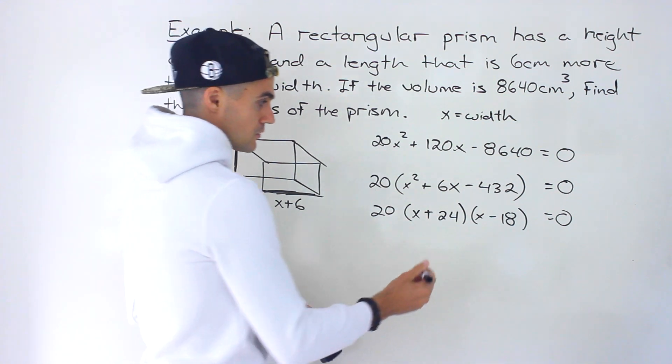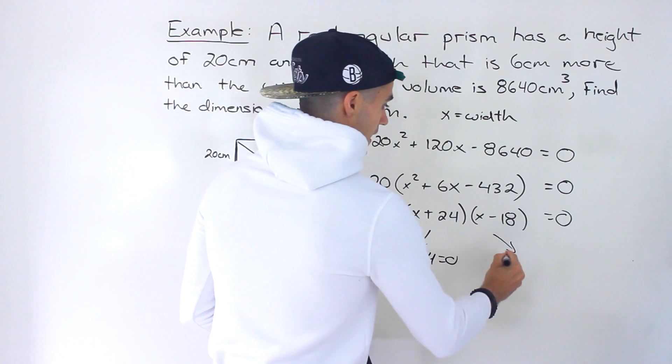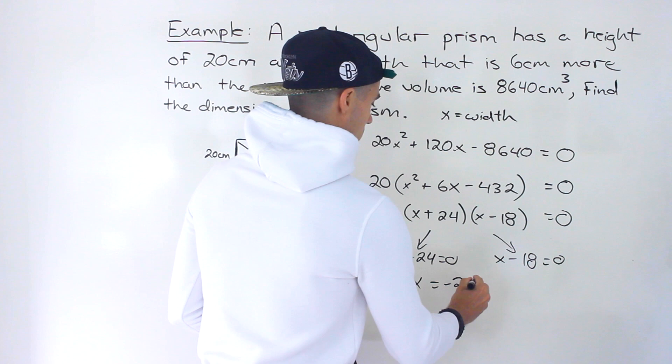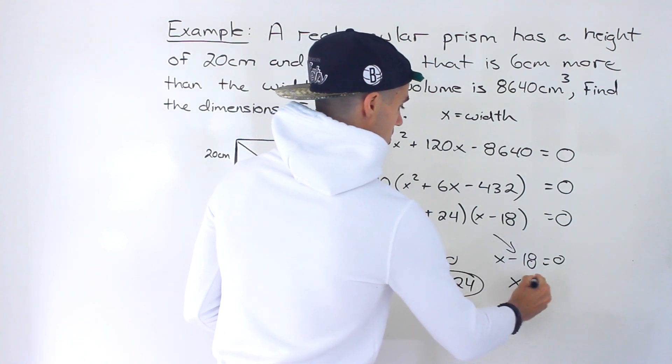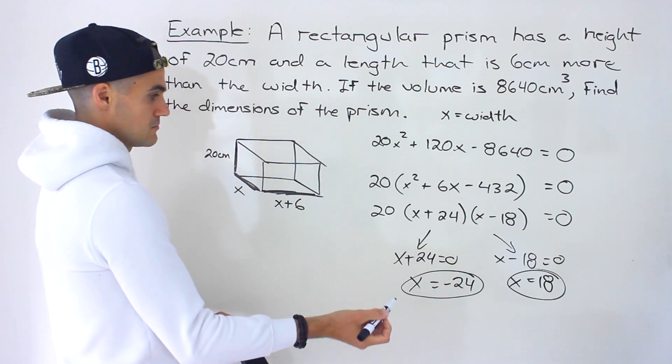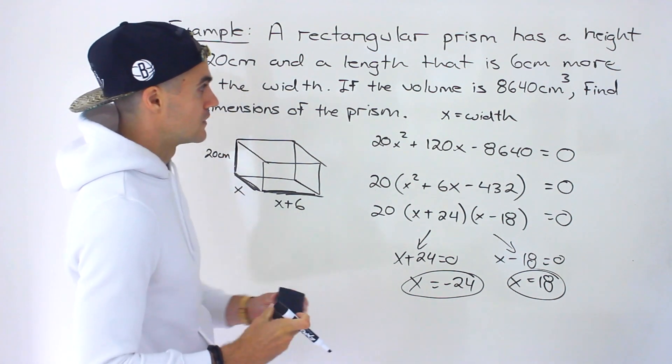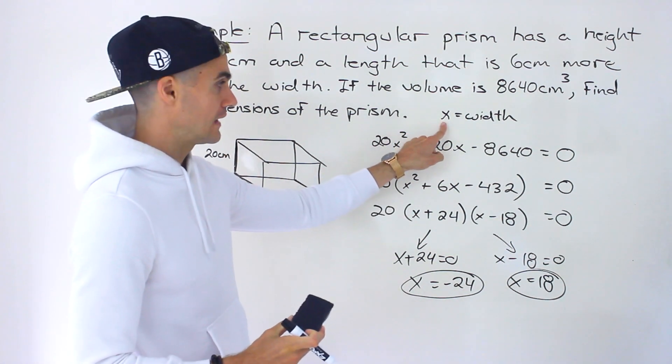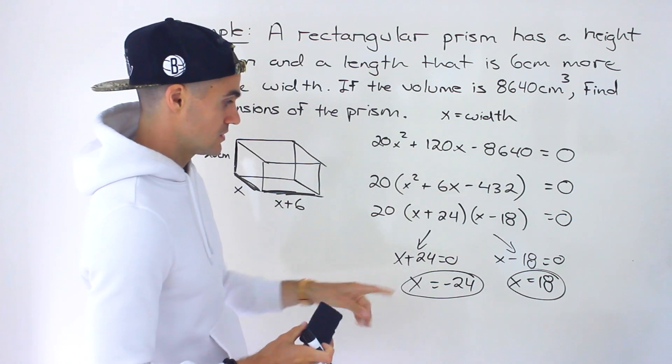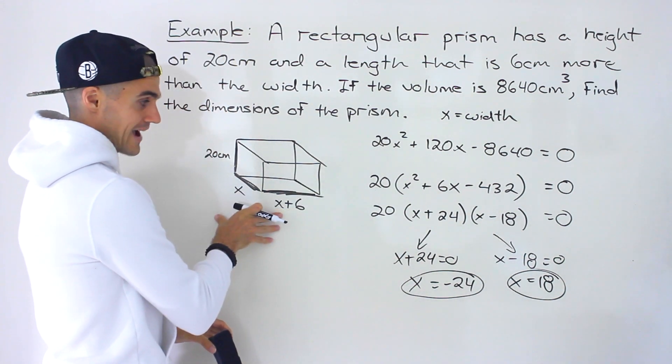From here, we can get the solutions x plus 24 equals 0, x minus 18 equals 0. This is going to be x equals negative 24. This is going to be x equals 18. Which of these solutions is admissible? Well, notice negative 24 is not because we can't have a negative 24 width. That's what we let x be.